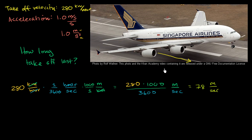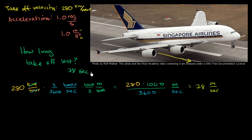So 78 meters per second is quite fast — roughly three-quarters the length of a football field every second. Now, to answer how long takeoff lasts: the acceleration is 1 meter per second per second, so after every second the plane goes 1 m/s faster. Starting from 0, after 1 second it's going 1 m/s, after 2 seconds 2 m/s, and so on. To reach 78 m/s, it takes 78 seconds — roughly a minute and 18 seconds.